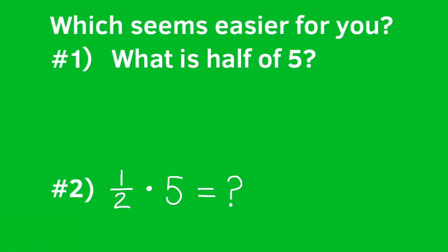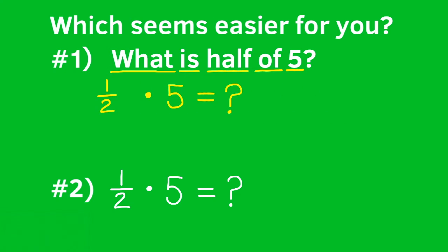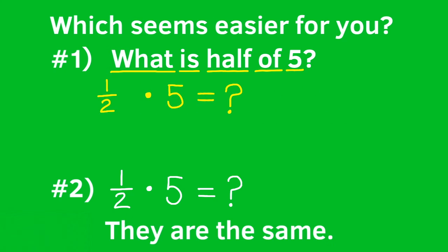Let's take a closer look at number one. The word 'what' is asking a question, so we can put a question mark there. The word 'is' means equals, and 'half' can be written as one over two. The word 'of' means to multiply, and we can bring down the five. Since the order doesn't matter, we can rearrange it. And now look — number one and number two are both the same.